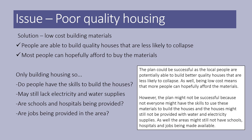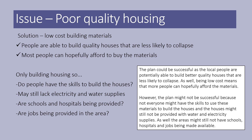So my response would be something like: the plan could be successful, as the local people are potentially able to build better quality houses that are less likely to collapse. Being low cost means that more people can hopefully afford the materials. However, the plan might not be successful because not everyone might have the skills to use these materials to build the houses. The houses might still not be provided with water and electricity supplies. The areas might still not have schools, hospitals, and jobs available. Plan and maybe bullet point potential answers — keep it obvious. The mark scheme reflects those various points.